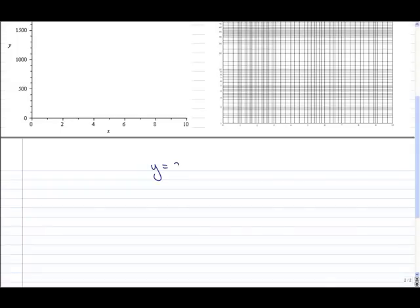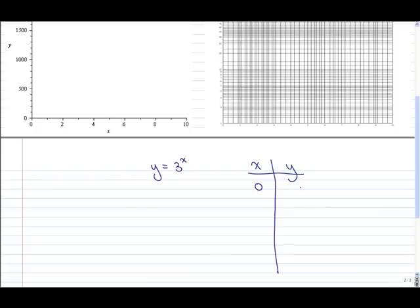Our function is y equals 3 to the x. If we make a table of values starting with an x value of 0: 3 to the 0 gives us y equals 1. When x is 1, y is 3. When x is 2, y is 9.